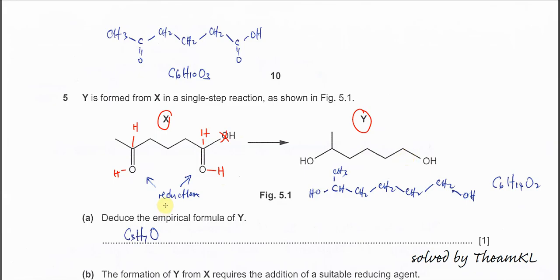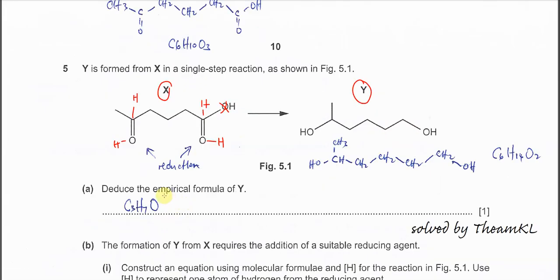For part A, we know that the empirical formula must be deduced from the molecular formula. So for compound Y, I'll draw it out to show how many oxygens, carbons, and hydrogens are present. We know that it has 6 carbons.